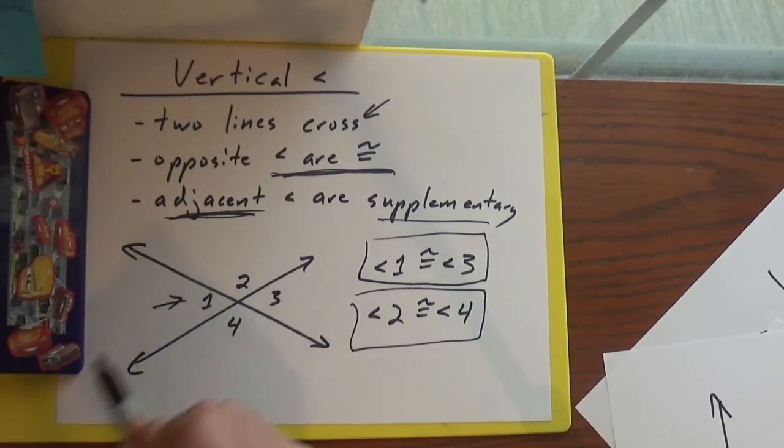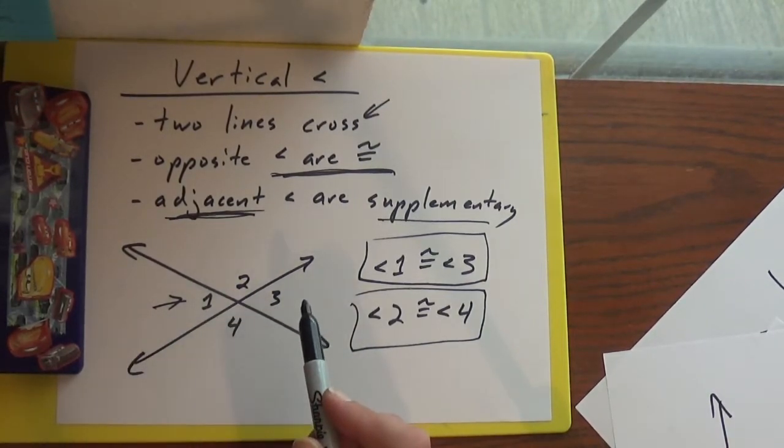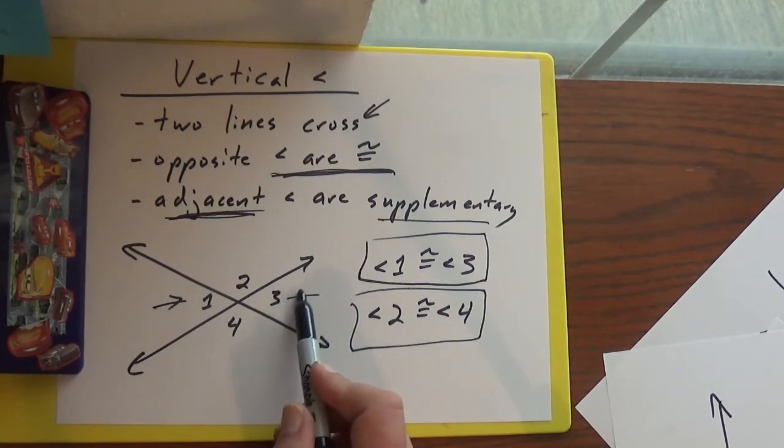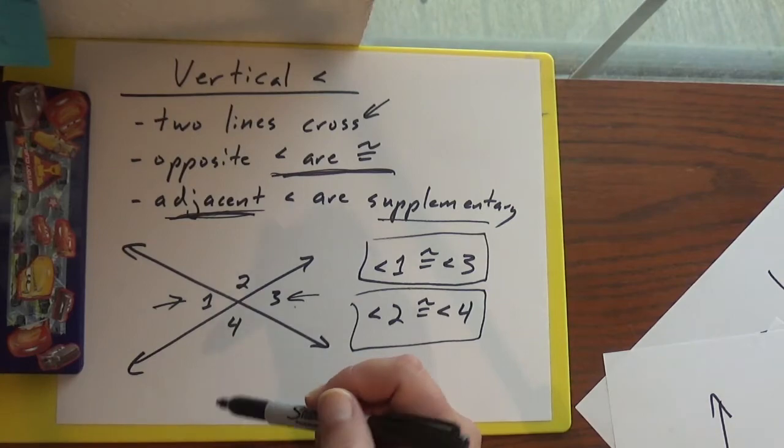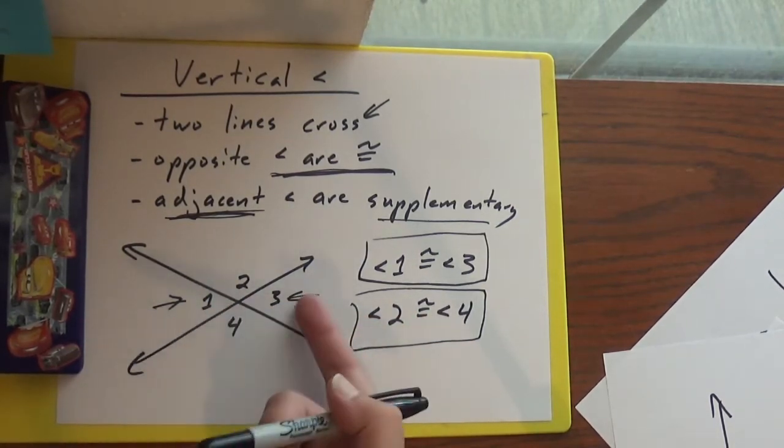So basically, if you know one angle, you know the rest of them. Because this angle, whatever that is, is the same as this one. And then these other two angles are just 180 minus whatever those guys are.